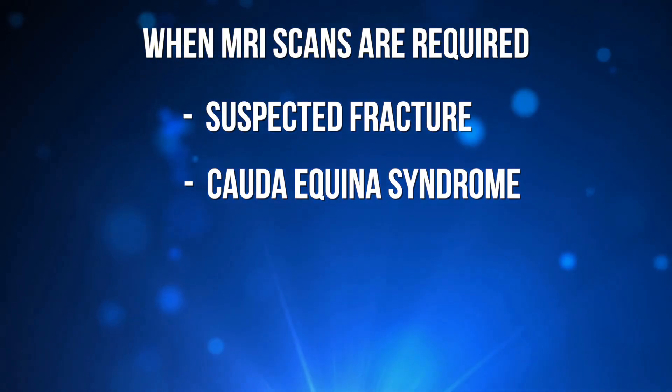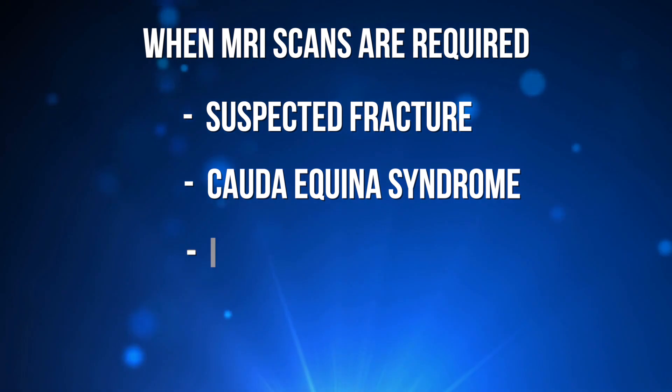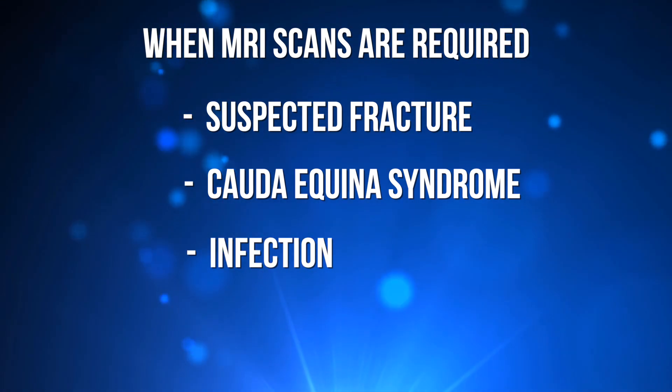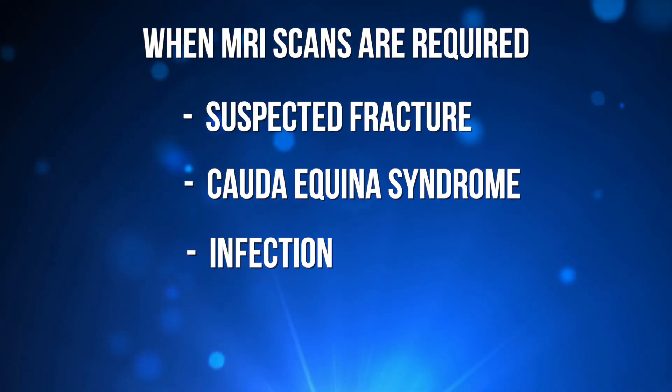Another condition requiring imaging is spinal infection, though this is very rare. Typically, people with a spinal infection are immunocompromised — either on strong chemotherapy medication, have an HIV infection, a history of TB (tuberculosis), or a recent urinary tract infection.